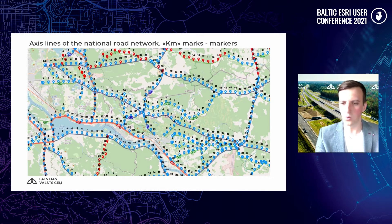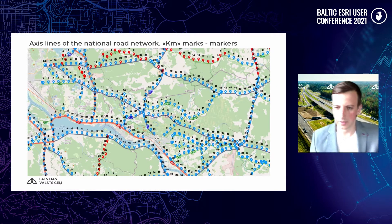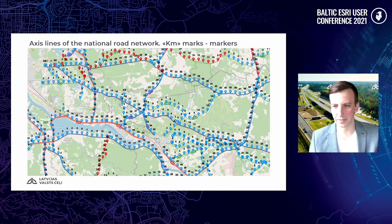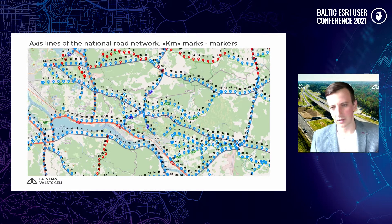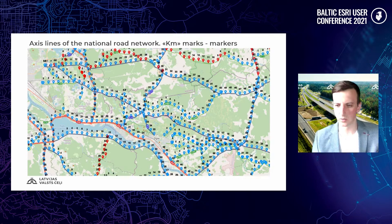For example, road A1, kilometer 10.524. In order to ensure accurate and unmistakable location data management in support of asset management and other processes managed by our company, we decided to introduce a linear reference system in the national road network based on a geodatabase and Esri Roads and Highways software.